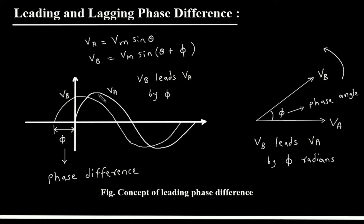In the phasor diagram, we are taking VA as a reference because in the alternating quantity, VA starts from the zero point. Since VB is leading, it is on the upper side of the phasor diagram. The phase difference phi is represented as the phase angle in the phasor diagram. If the phase angle is positive, we can say it is a leading phase difference. This is the concept of leading phase difference.